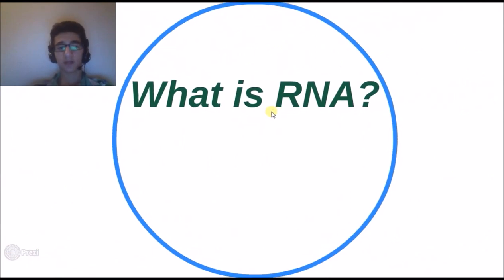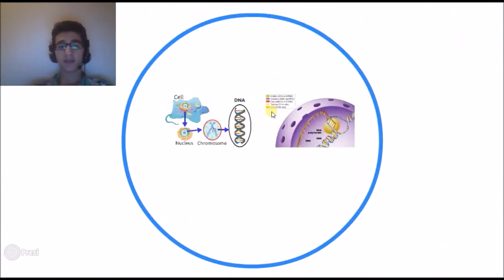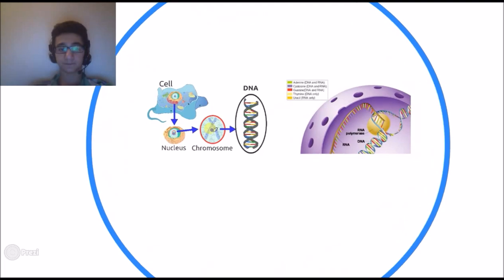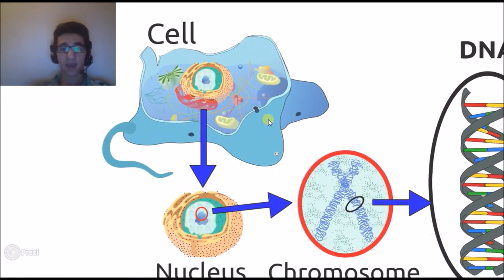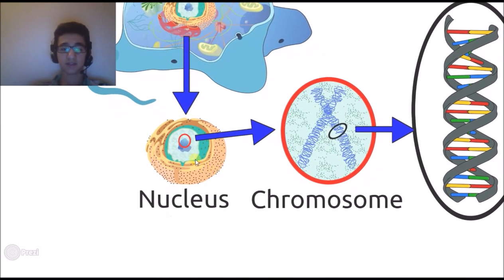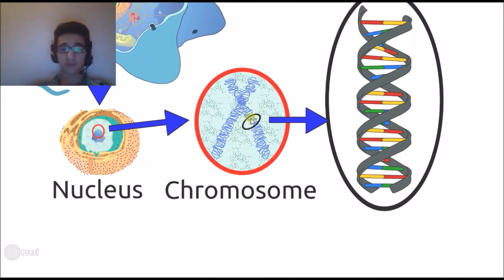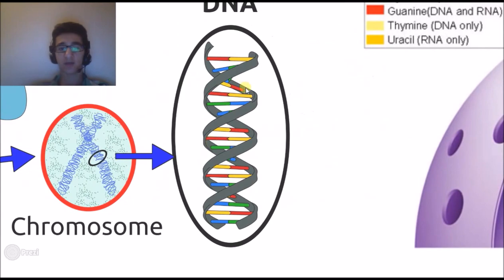What is RNA? Now RNA is ribonucleic acid, and where you can find DNA and RNA is inside the cell. If you go inside the nucleus, you'll find chromosomes, and in the chromosomes there is the DNA.